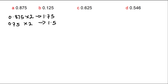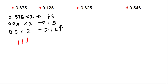We multiply 0.5 by 2. 0.5 by 2 is 1.0. From here we cannot multiply further because the fractional part is 0. So 0.875 in binary, writing from bottom to top, is 0.111. That's all for this example. Let's move on to example B, which is 0.125.